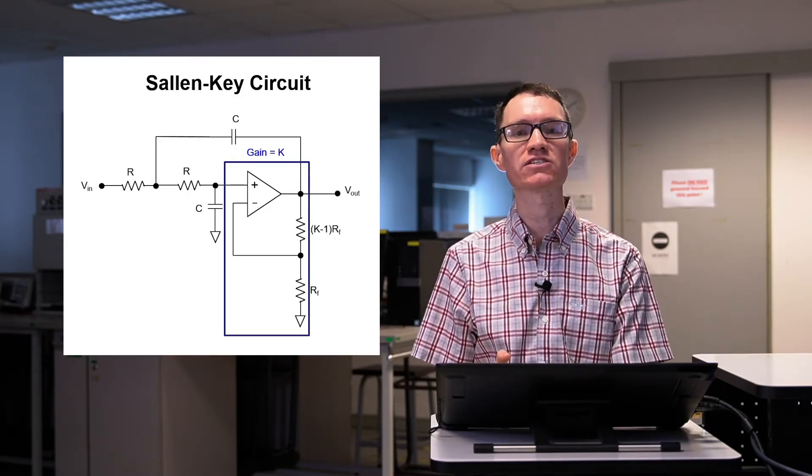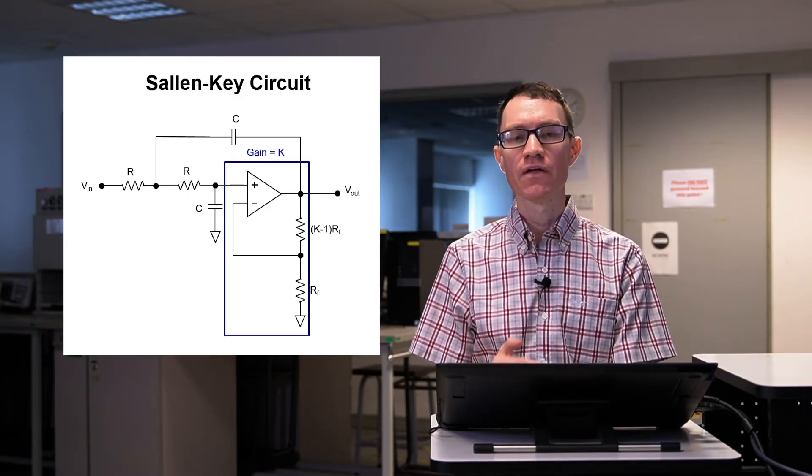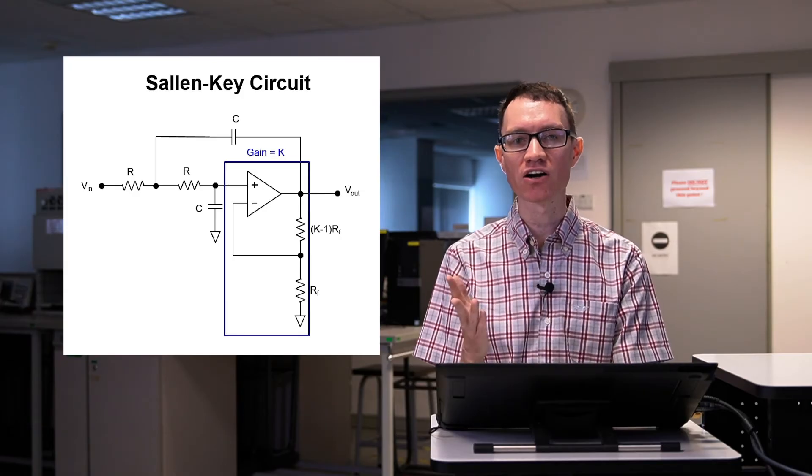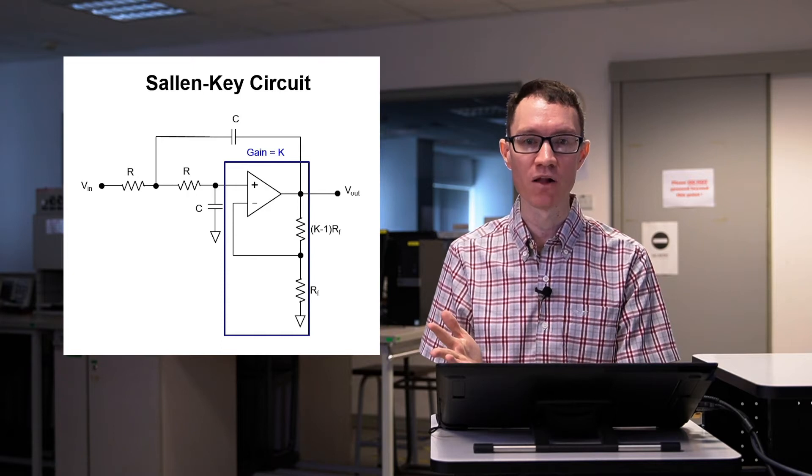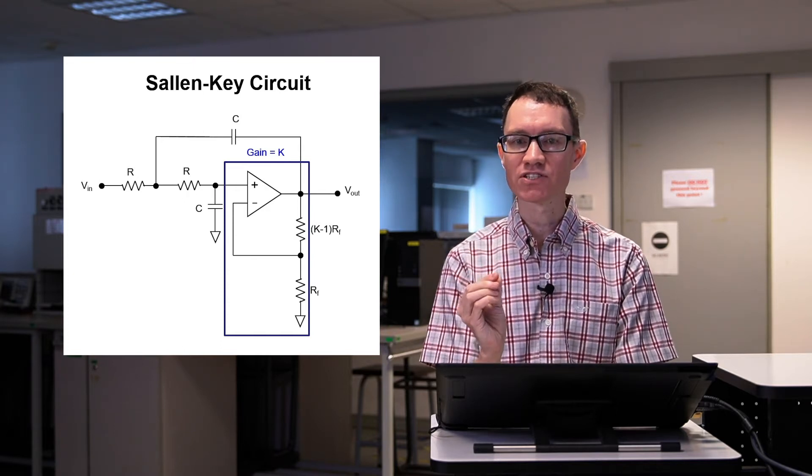At DC, these capacitors act as open circuits. Then the resistors labeled R are just in series with the input terminals of the non-inverting amplifier and they don't affect the gain at all. Therefore, the DC gain of the circuit is just K.